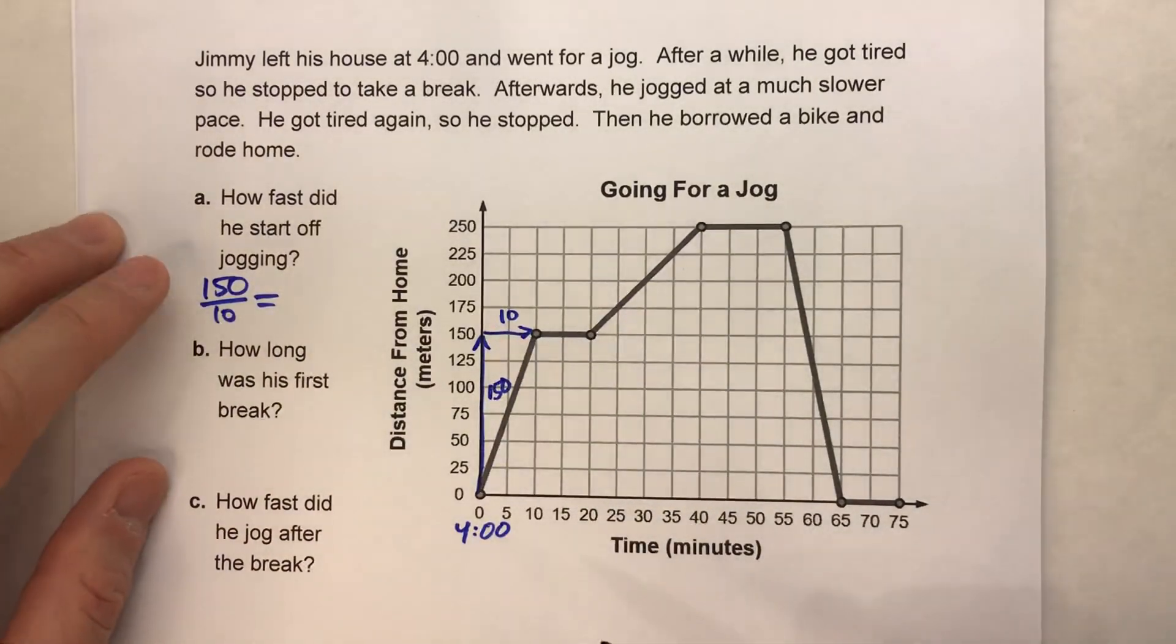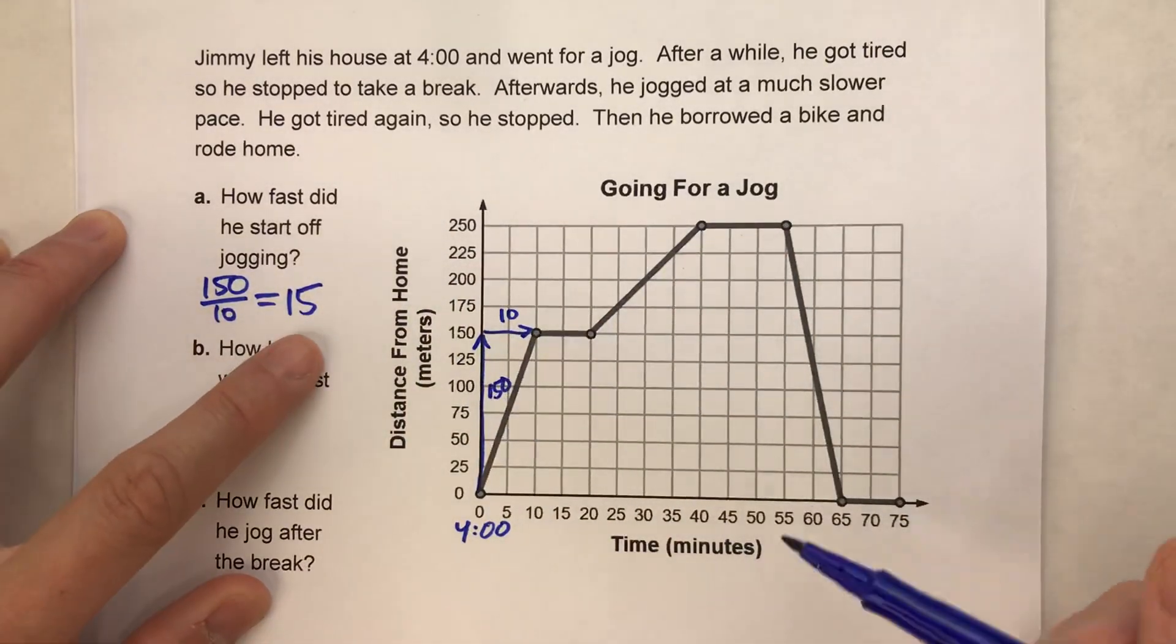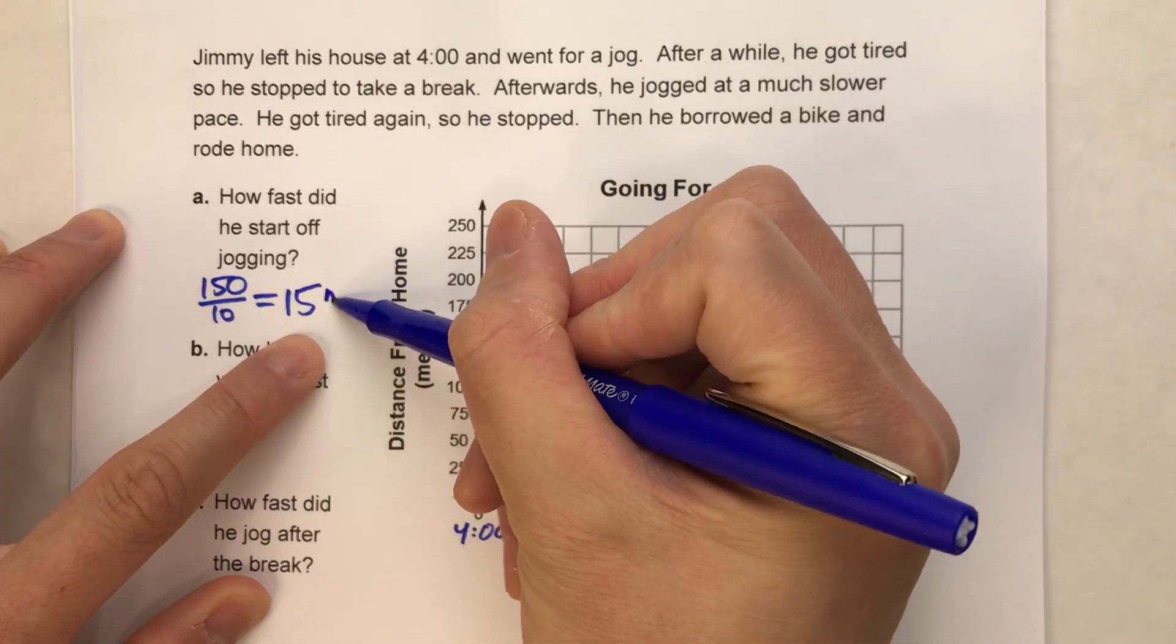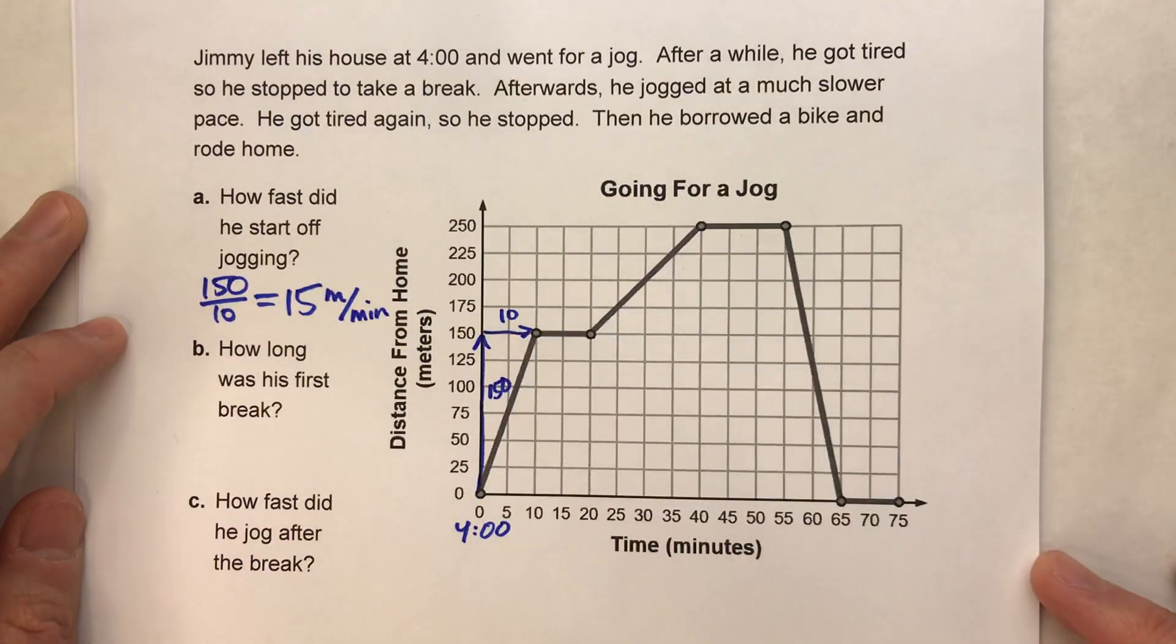And if I divide that, 150 divided by 10, that's 15. So that would be 15 meters per minute. And there's his speed when he started.